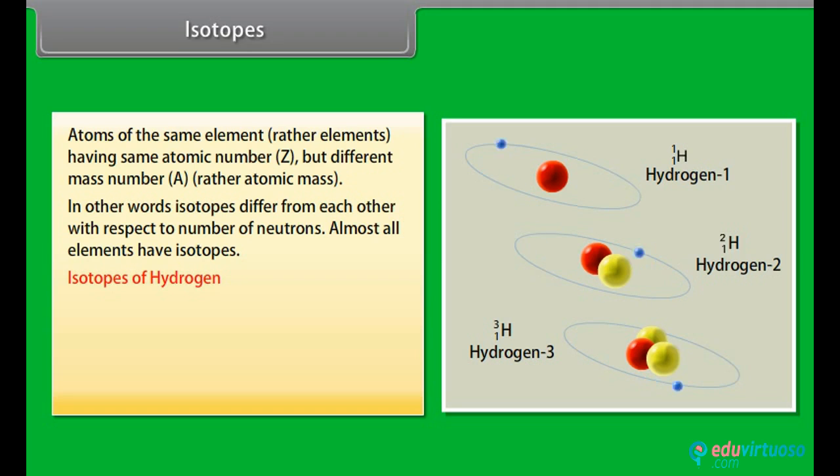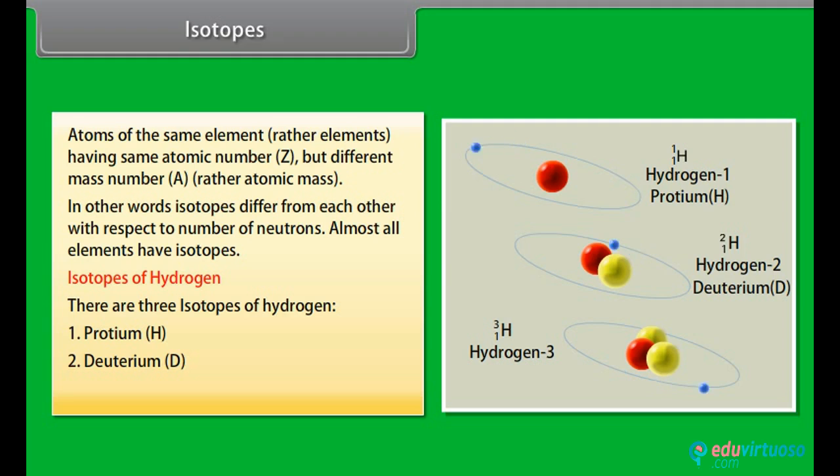Isotopes of Hydrogen. There are three isotopes of Hydrogen: Protium, Deuterium, and Tritium.